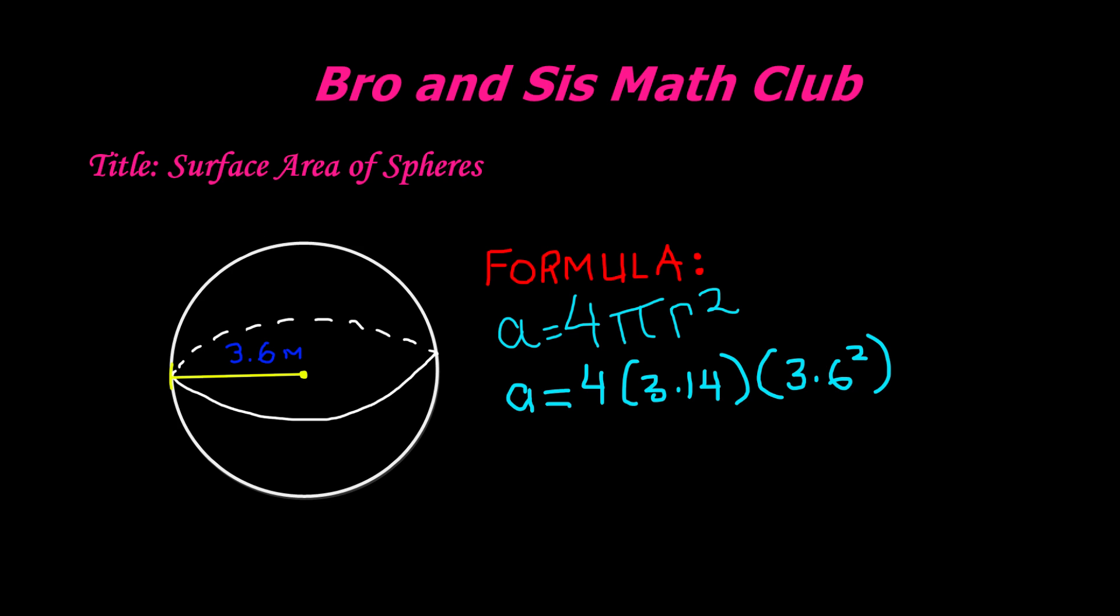3.6 squared will give us 12.96 because 3.6 times 3.6 gives us 12.96. So area is equal to 4 times 3.14 times 12.96.